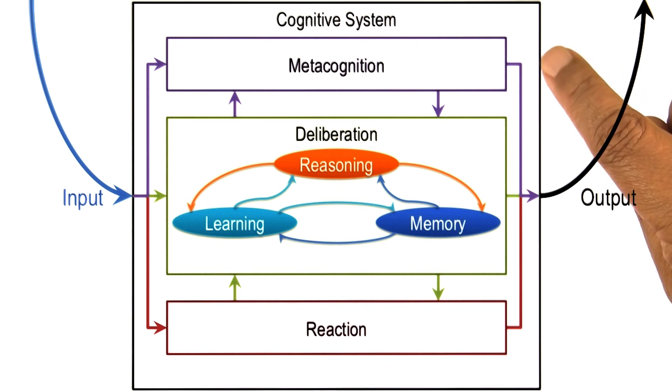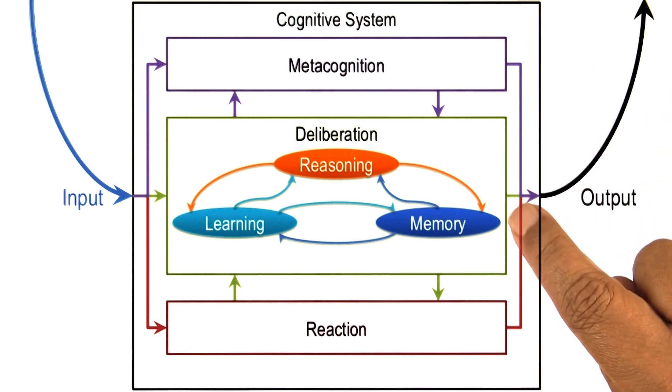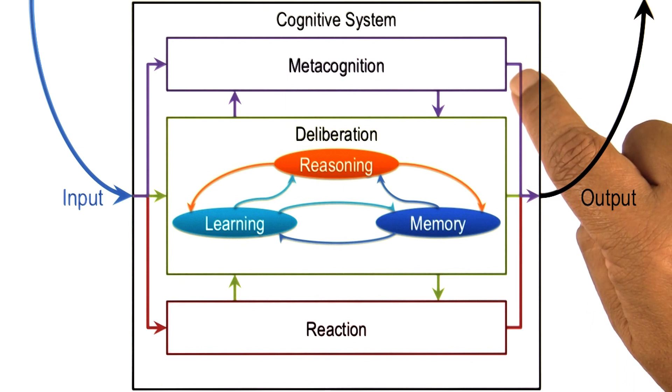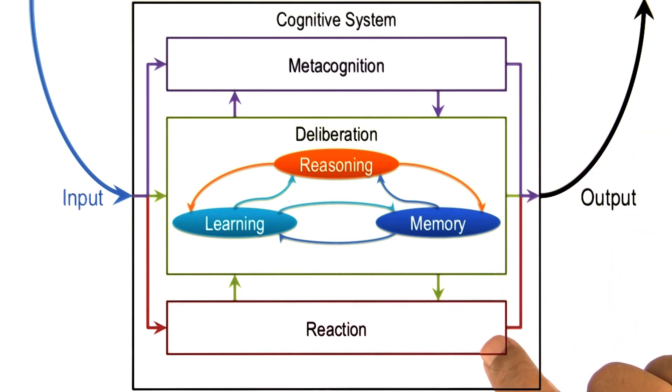Metacognition, on the other hand, the third layer here, has to do with reasoning about the internal mental world. So metacognition reasons about the deliberation, or metacognition can also reason about reaction. Let us take an example of the metacognition also. Imagine again that I have to change lanes, and as I change lanes to the left, the cars behind me honk because I did not leave enough space for the car that was already moving on the left lane.